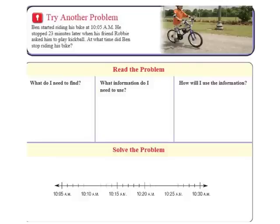Okay, let's try another one. This is page 480. It says Ben started riding his bike at 10:05 AM. So that's when he started. He stopped 23 minutes later. So this time, it sounds like we're going to add instead of subtract. So he stopped 23 minutes later when his friend Robbie asked him to play kickball. At what time did Ben stop riding his bike?